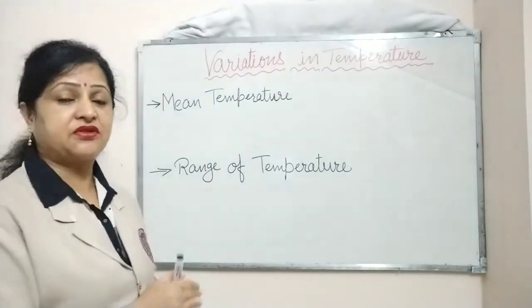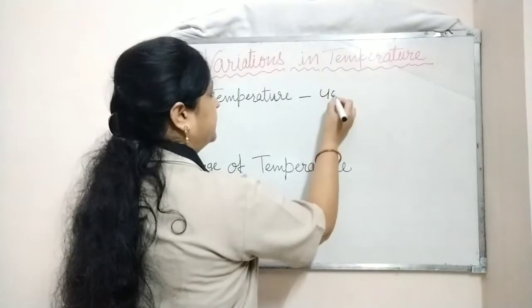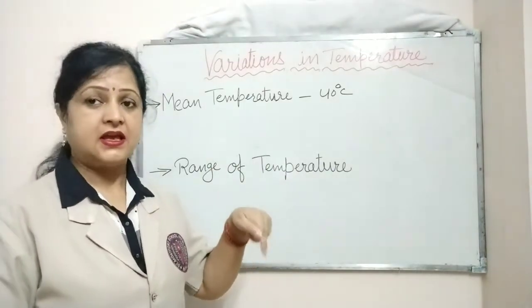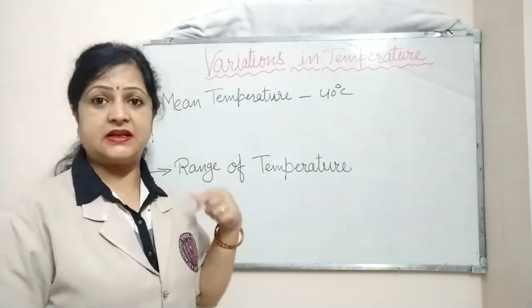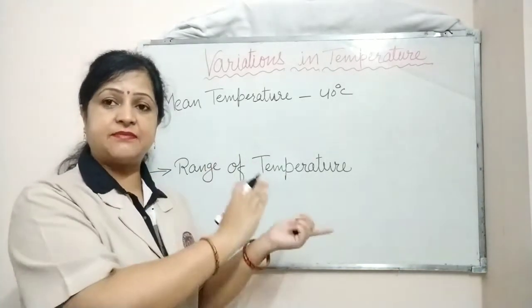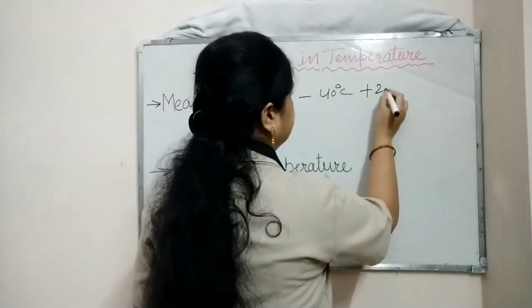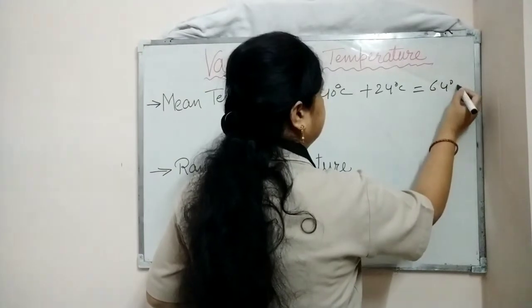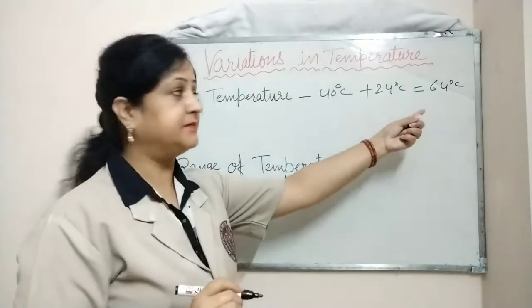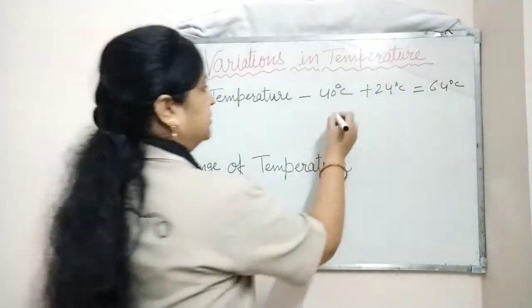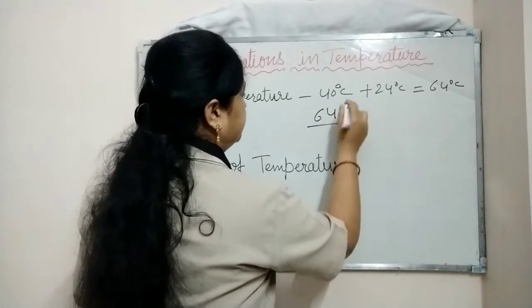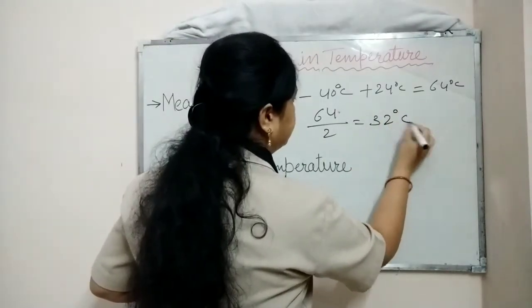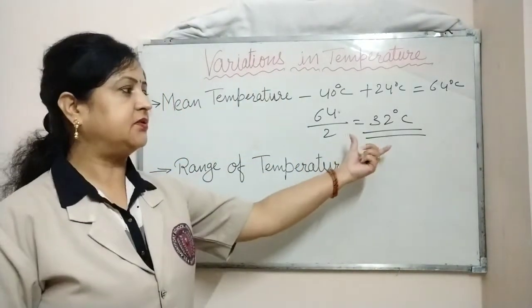Suppose the maximum temperature of the place is 40 degree Celsius, and the minimum temperature of the same place for the same day is 24 degree Celsius. We will add the maximum and the minimum temperature: 40 degree plus 24 degree Celsius gives a total of 64 degree Celsius. Then we divide 64 by 2, and we get the average temperature of that place for that particular day, which is 32 degree Celsius.